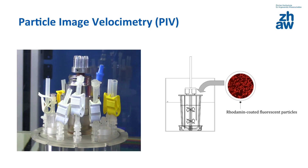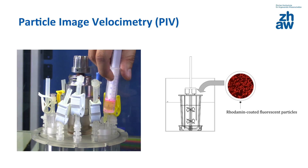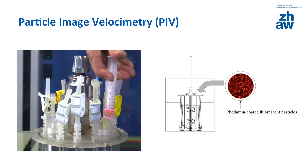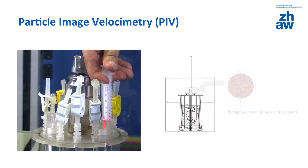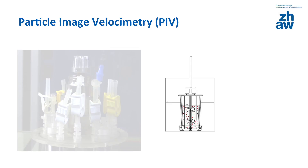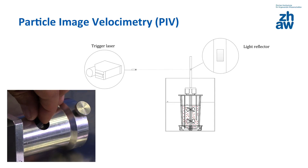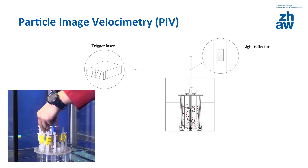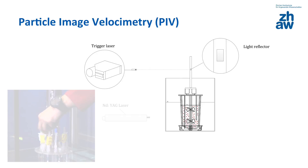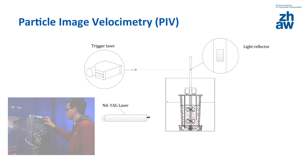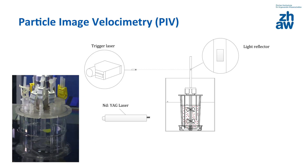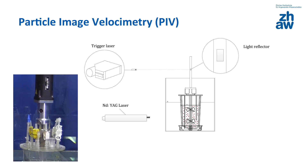Rhodamine-coated fluorescent particles are then added to the Univessel. The particles follow the fluid flow mostly slip-free, absorbing the green laser light and emitting fluorescent light which is simultaneously recorded. After putting the bioreactor in position, a reflection marker is placed on the bioreactor shaft. In combination with the trigger laser, the reflection marker allows phase-locked measurements to be made.